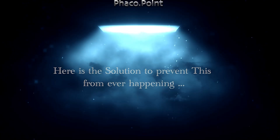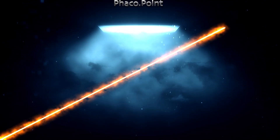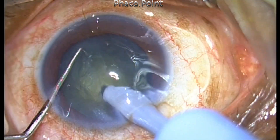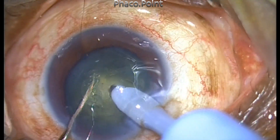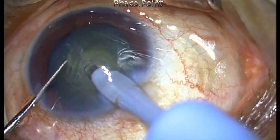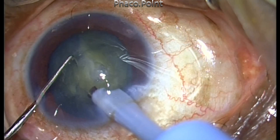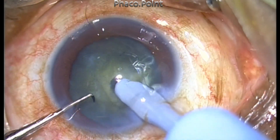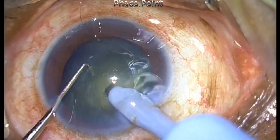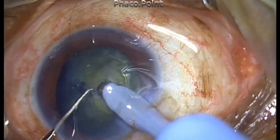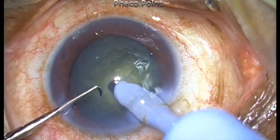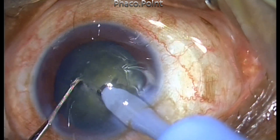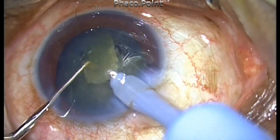Here's the solution that will prevent this from happening. Surge is much more common in a peristaltic than a venturi machine because the tip occlusion will stimulate the vacuum to work, and therefore the minute the occlusion breaks, it takes time for the vacuum to step down, and this may cause a surge mechanism to occur.